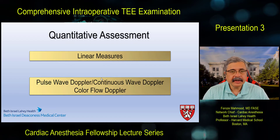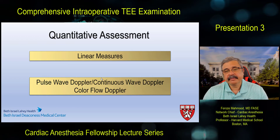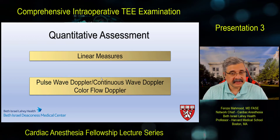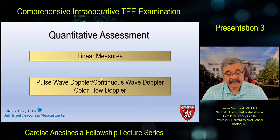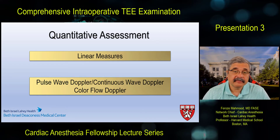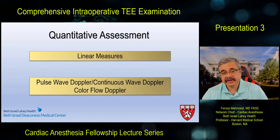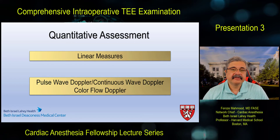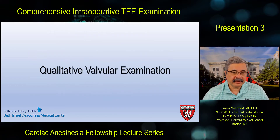Quantitative assessment is more objective and can be done more precisely. This consists of linear measures, pulsed-wave Doppler, continuous-wave Doppler, and color flow Doppler to assess stenosis, regurgitation, and ventricular dysfunction.